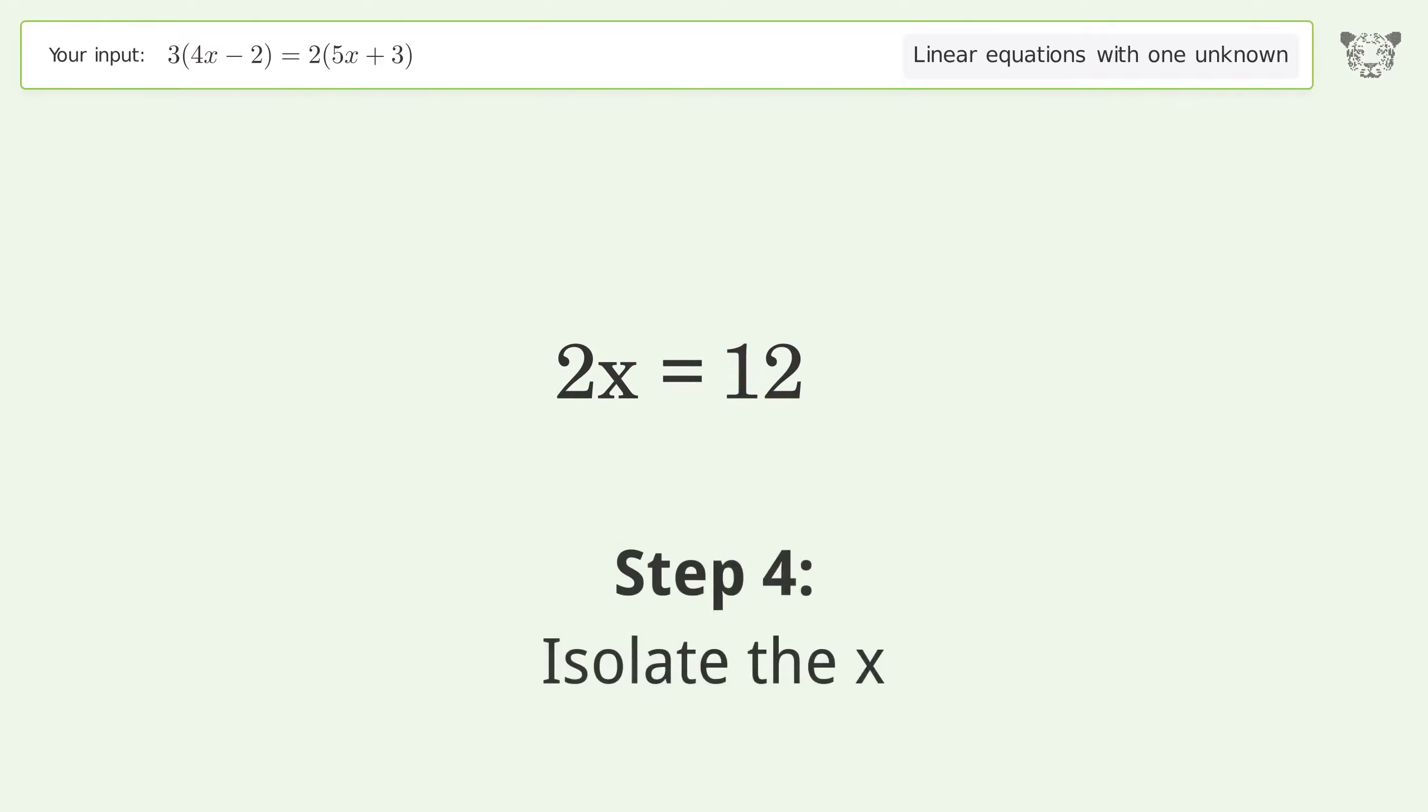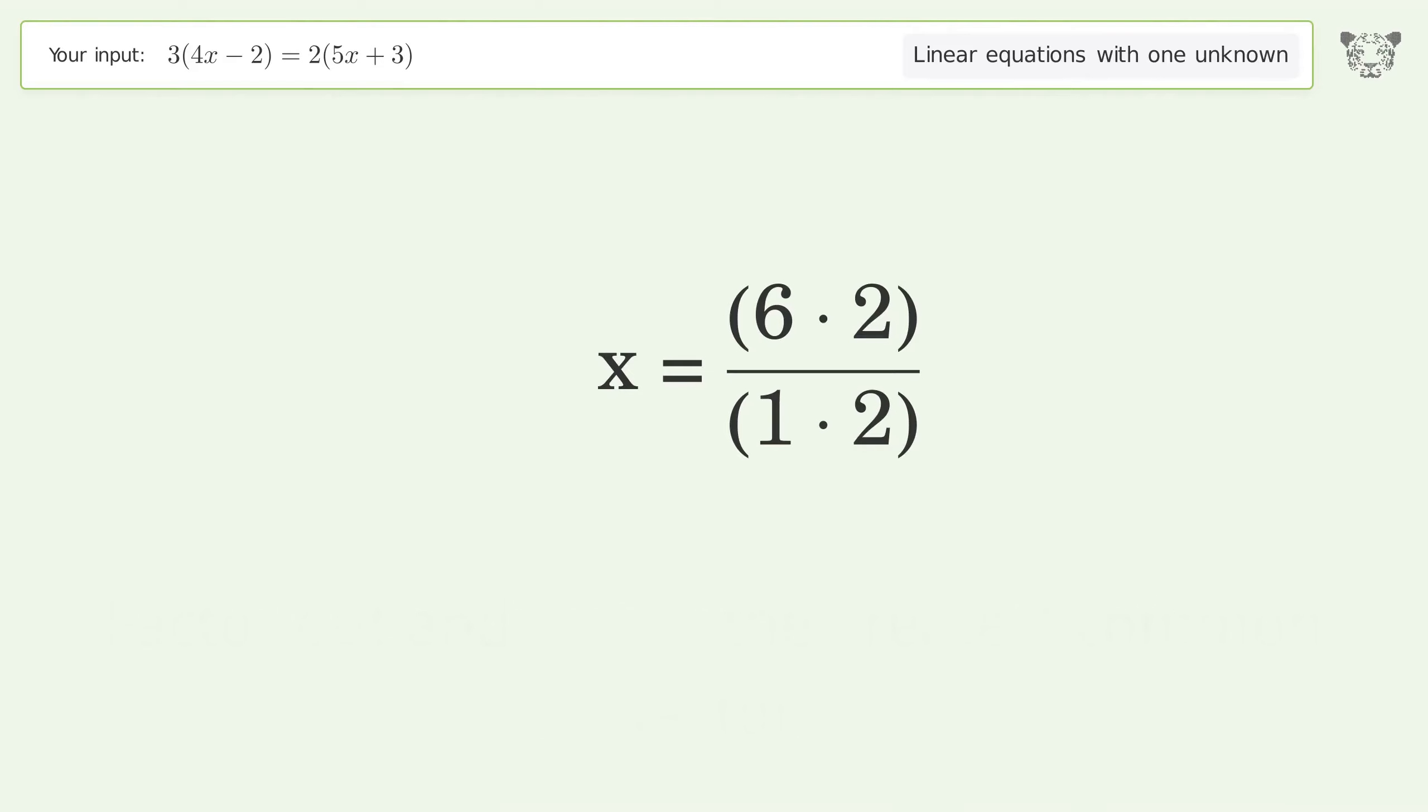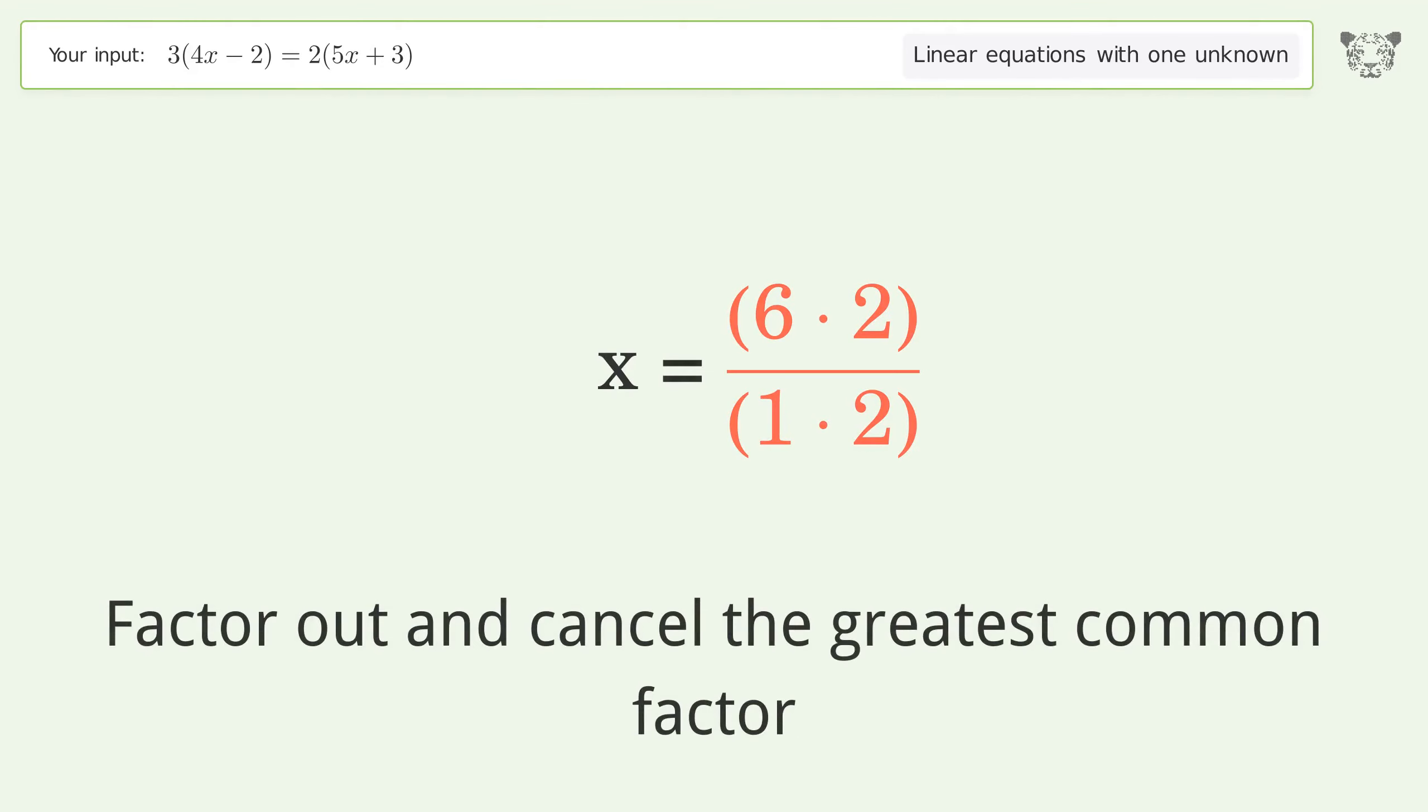Isolate x by dividing both sides by 2. Simplify the fraction by finding the greatest common factor of the numerator and denominator, then factor out and cancel the greatest common factor.